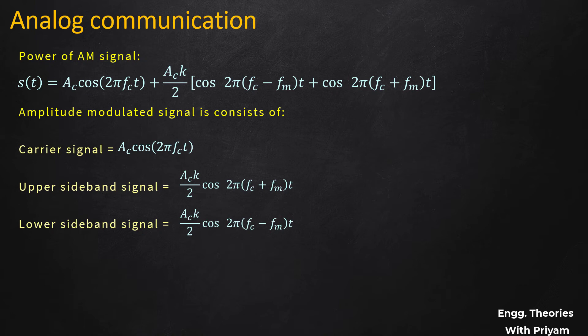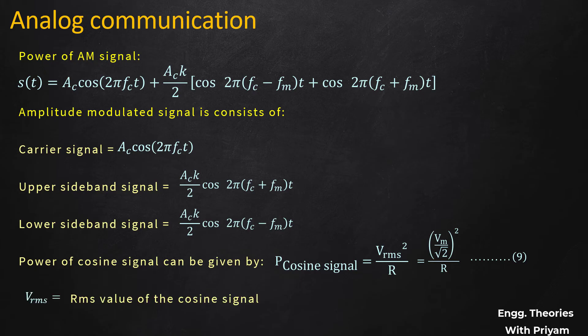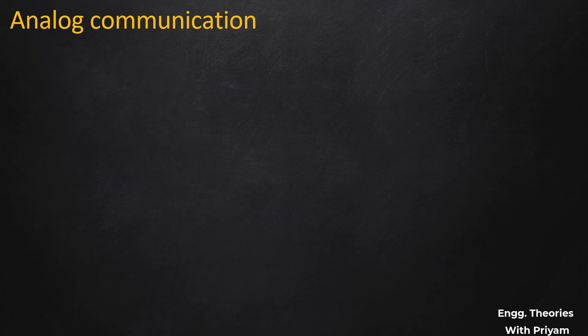The power of a cosine signal is given by V_rms²/R, where V_rms = Vm/√2 (Equation 9). The total power of the amplitude modulated signal is the sum of the powers of its components: P_st = Pc + P_USB + P_LSB.